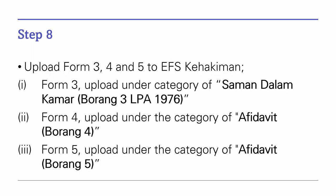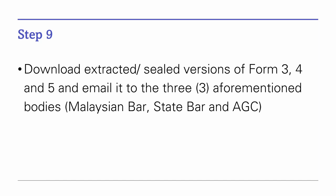Step 8: File your Forms 3, 4, and 5 to the EFS Kahakiman system. For Form 3, file it under the category of 'Saman Dalam Kama Borang 3 LPA 1976'. For Form 4, file it under 'Affidavit Borang 4'. For Form 5, file it under the category of 'Affidavit Borang 5'.